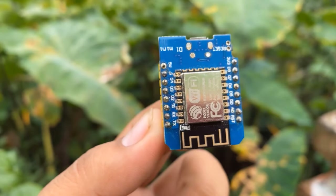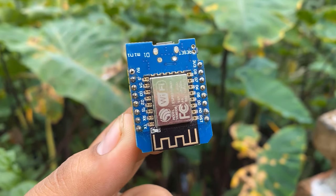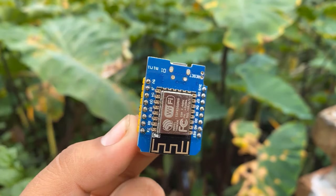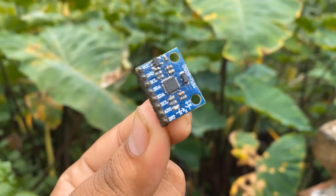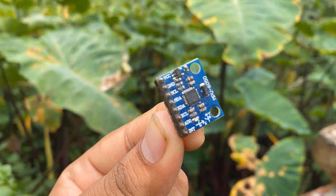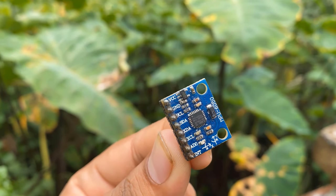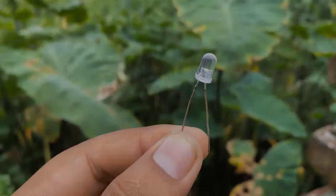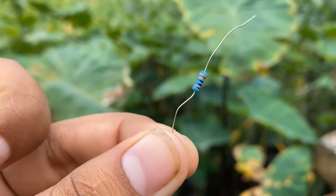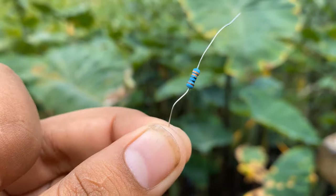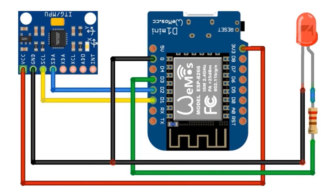Before getting started with Ordino IoT Cloud, we need some hardware. The first component is an ESP8266 based board — I selected the Wemos D1 mini, but you can use a NodeMCU board as well. We also need a sensor; for the demo I'm using an MPU6050 gyroscope sensor that can measure tilt angle. A 5mm LED of any color is used to control from the cloud dashboard, along with a 220 ohm and 330 ohm resistor. Connect the MPU6050 to the I2C pins and the LED to any digital pin.